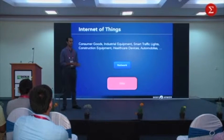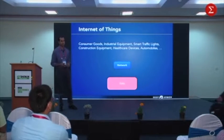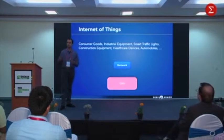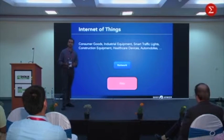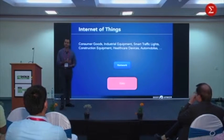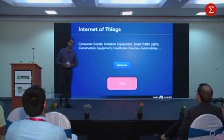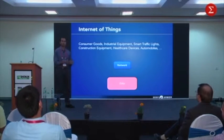Broadly, Internet of Things means everything — it's just things. It could be consumer goods, industrial equipment, traffic lights, construction equipment, healthcare devices, and so on. IoT is really all about data — data is the blood of IoT devices. The question is how do you manage the data, how do you protect it, how do you ensure its integrity and availability. That's where you see the complexities and the problems from both a security and functional point of view.